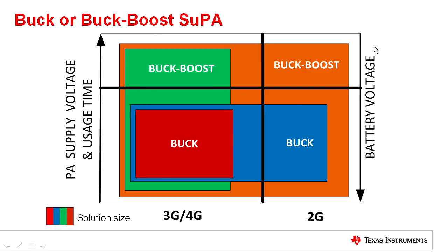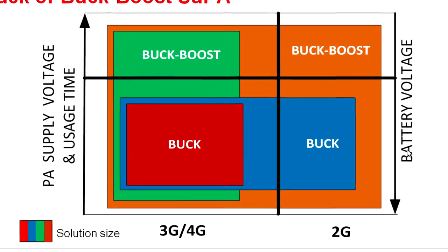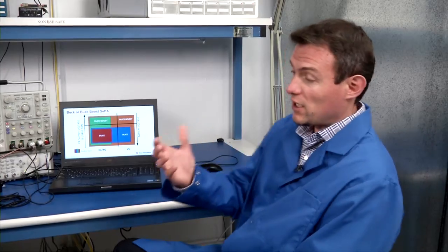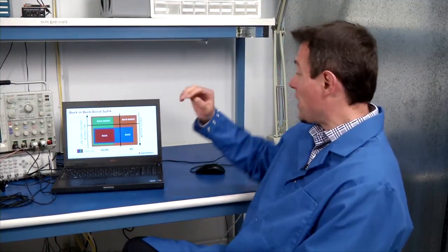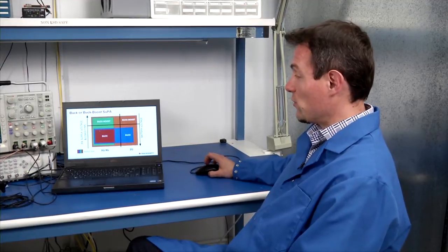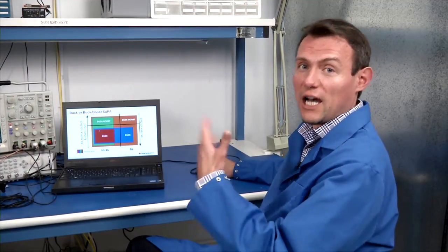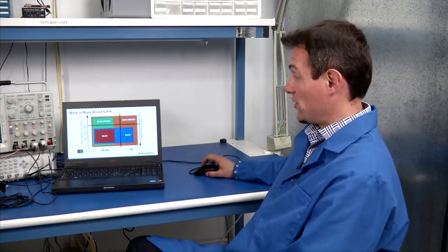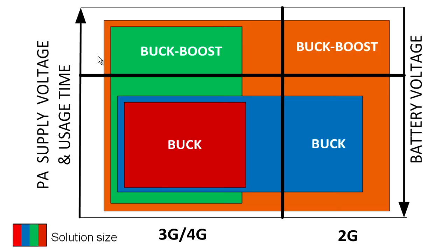Here on the right hand side, you see battery voltage. You can support low battery voltages or keep high battery voltages. Low battery voltages are especially important for longer usage time because your battery will sag the longer you use your phone. If you want to keep your PA operational, if you want high output powers, this voltage will be higher than the battery voltage, so you need some sort of boost.